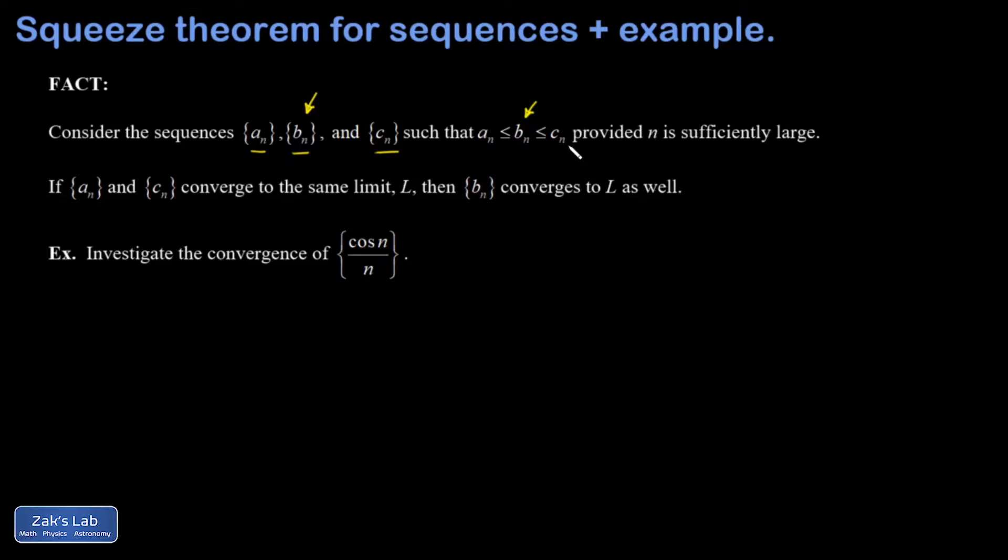That means if those two sequences, the one that's the lower bound on B and the one that's the upper bound, if they happen to converge to exactly the same number, that forces B to converge to that number as well.